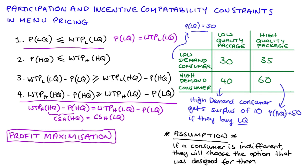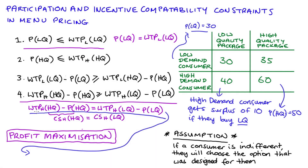At a price of 50 for the high quality option, the high demand consumer is technically indifferent between the two options because they get the same surplus either way, but our assumption says they will choose the high quality option. We can work this out formally using our equation: the willingness to pay of the high demand consumer for the high quality package is 60, minus the price P_HQ we're looking for, and this equals the willingness to pay for the low quality option, 40, minus the price of the low quality option, 30. Solving: 60 minus P_HQ equals 10, so the price is 50.